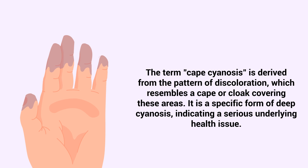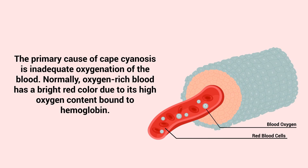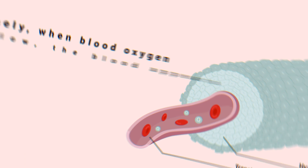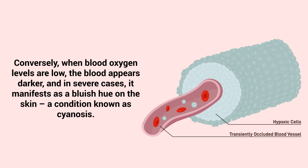Cape cyanosis is a specific form of deep cyanosis, indicating a serious underlying health issue. The primary cause is inadequate oxygenation of the blood. Normally, oxygen-rich blood has a bright red color due to its high oxygen content bound to hemoglobin. Conversely, when blood oxygen levels are low, the blood appears darker.